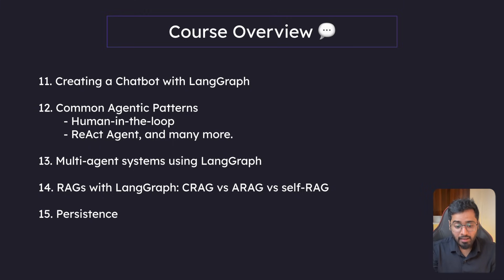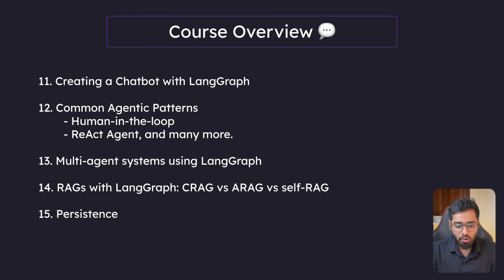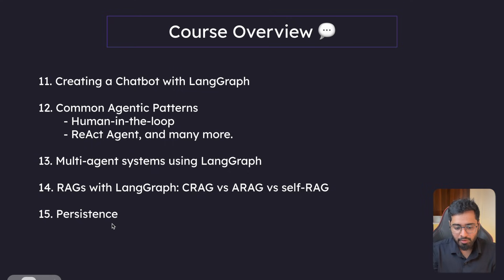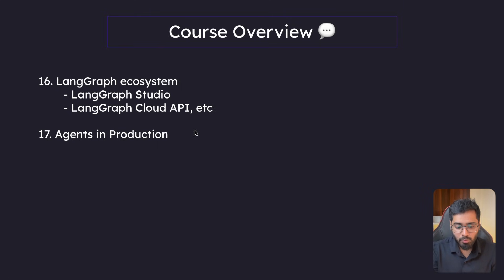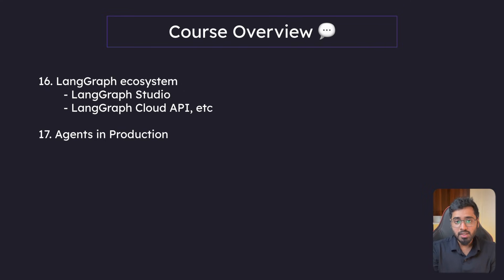Then we will integrate RAGs into LangGraph. We will explore what C-RAGs are — basically corrective RAGs — and also what A-RAGs, or adaptive RAGs, are, as well as self-RAGs. We'll also look at how persistence works in LangGraph, and some of the other tools LangGraph provides to help build production-grade agents, like LangGraph Studio and the LangGraph Cloud API.